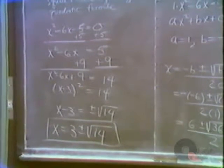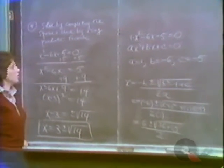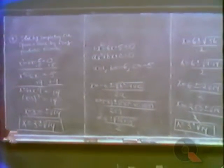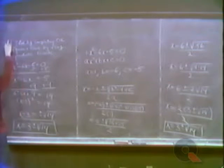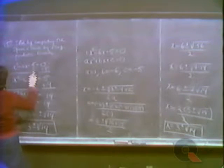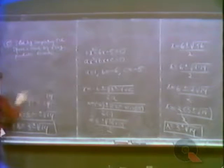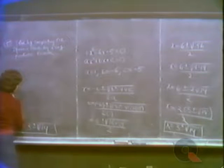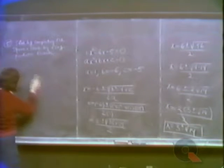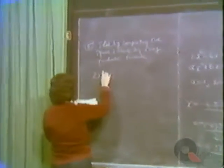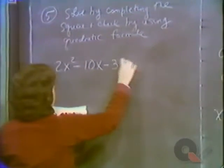It's up to you to decide which method you prefer. Most people rely on the quadratic formula, but in this case completing the square seemed like slightly less work. In the next example — Example 5 — completing the square gets a little more complicated, which makes a good case for the quadratic formula. The example is 2x squared minus 10x minus 3 equals zero.